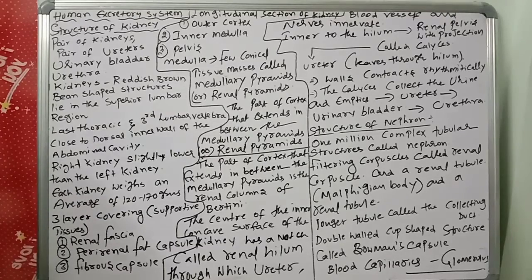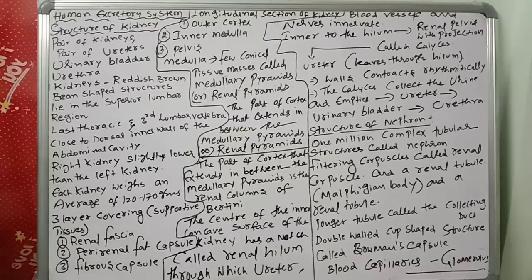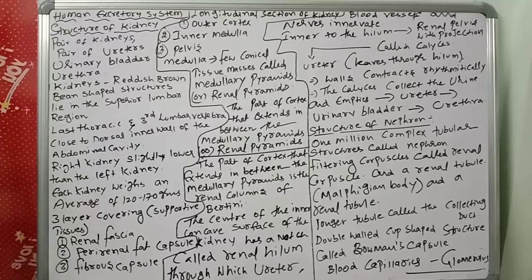We also discussed the excretory organs of different organisms, such as protonephridia, metanephridia, flame cells, renette cells, solenocytes, Malpighian tubules, antennal glands, and green glands.